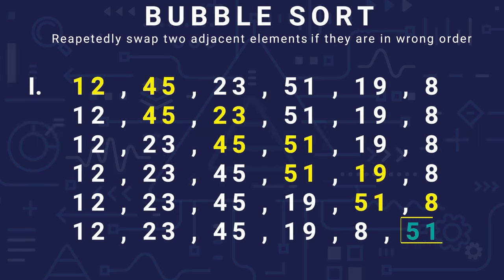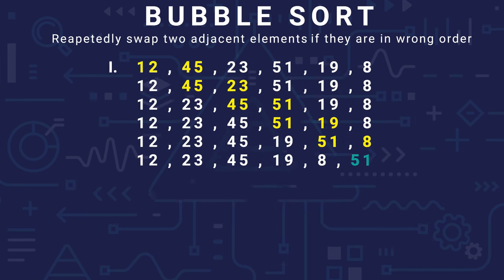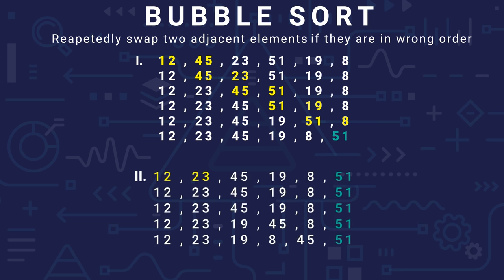What happened here is that the maximum element — the most important thing — reached its correct last position. But the rest of the area is not sorted yet. So now we will repeat the same procedure.